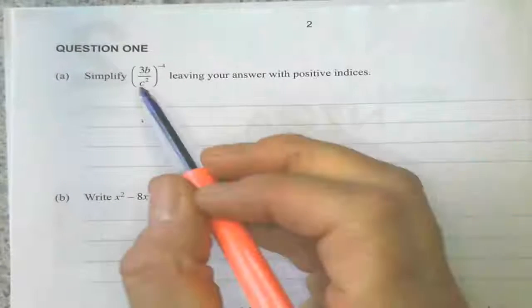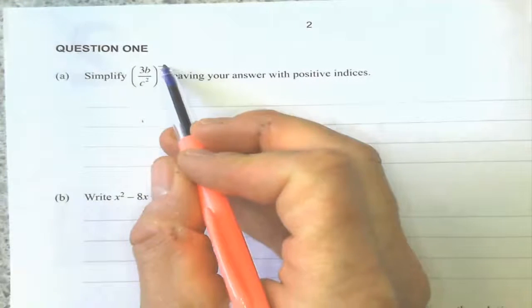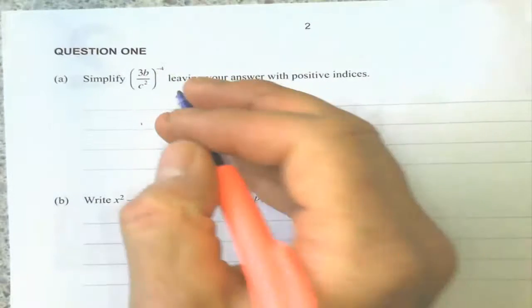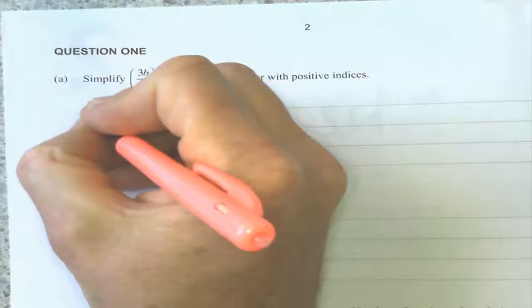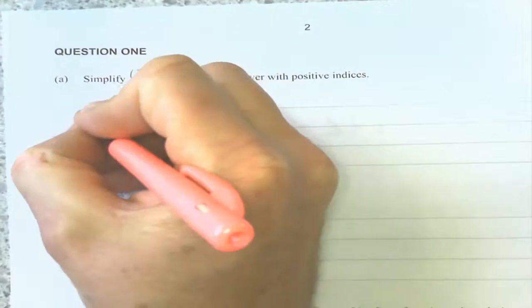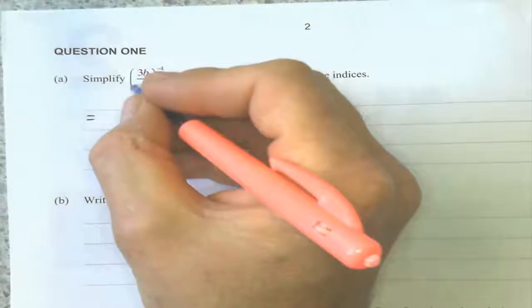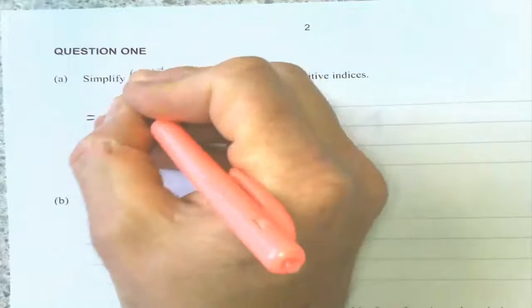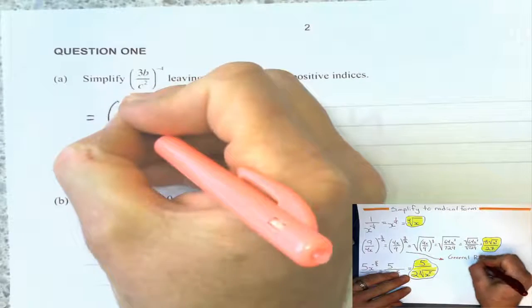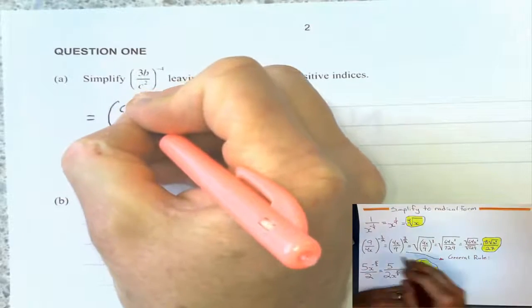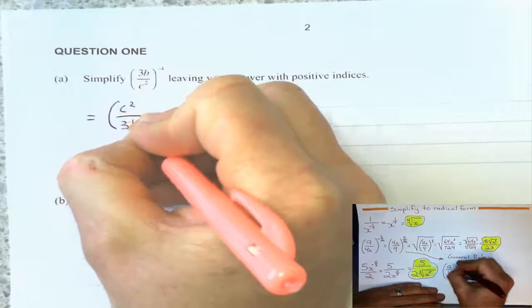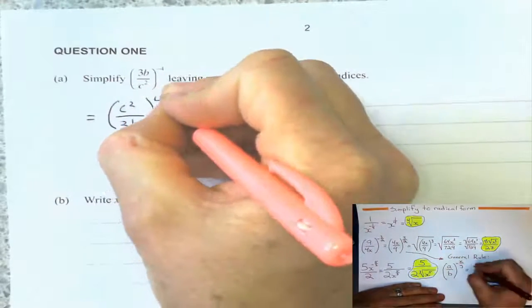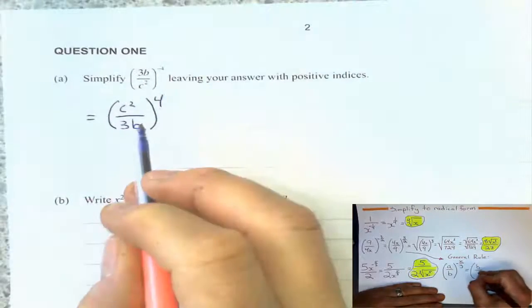Okay, so the first one is an old simplifying one. I've got a fraction to a negative exponent. What that means when I've got a fraction to a negative exponent is it's equal to the reciprocal to the positive exponent. So this right here is equal to c squared over 3b — that's the reciprocal — to the positive 4 power.